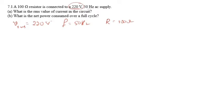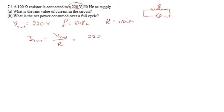If AC is supplied to a resistor connected to an AC source, the RMS value of current is I_RMS = V_RMS / R = 220 / 100 = 2.2 ampere.